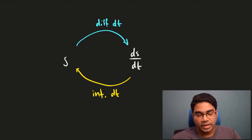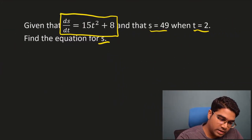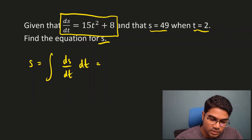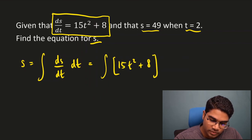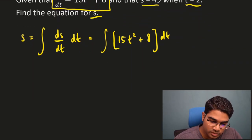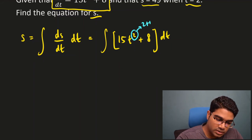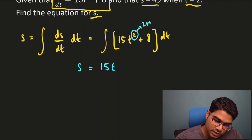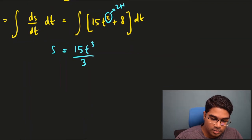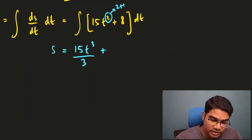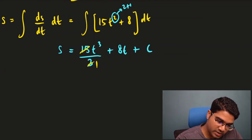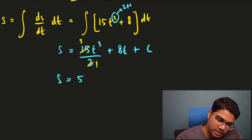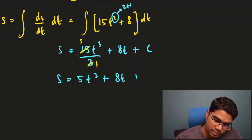So s equals the integration of ds/dt with respect to t, which equals the integration of 15t squared plus 8 with respect to t. The power is 2, so 2 plus 1 gives 3. We get s equals 15t cubed over 3 plus 8t — since 8 is just a number, integrating with respect to t gives 8t — plus the constant of integration c. Simplifying: 15 divided by 3 gives 5, so s equals 5t cubed plus 8t plus c.